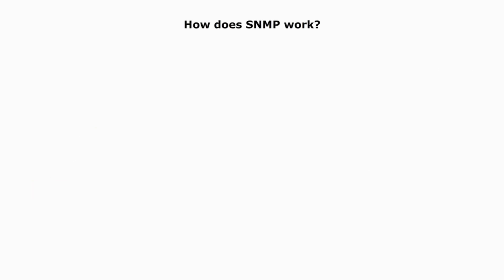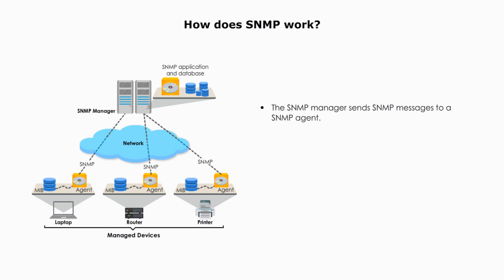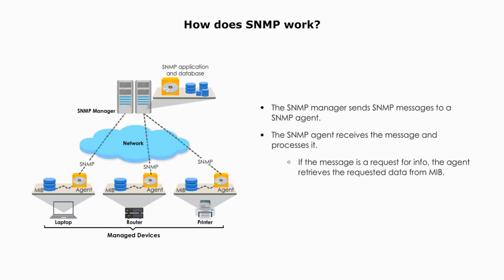How does SNMP work? The SNMP Manager sends SNMP messages to an SNMP Agent. The SNMP Agent receives the message and then processes it. If the message is a request for information, the agent retrieves the requested data from MIB, from its own database. If the message is a command, the agent executes the command on the device.